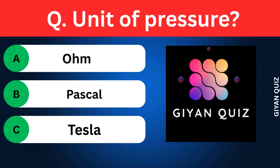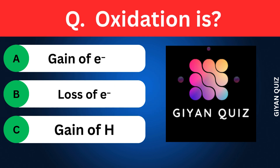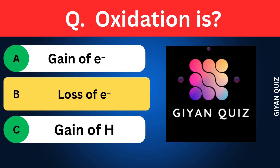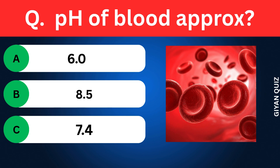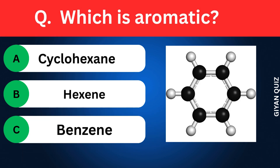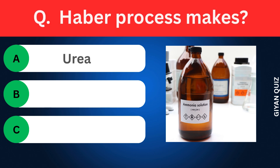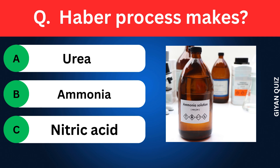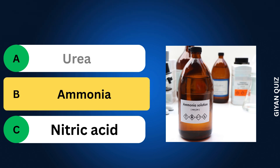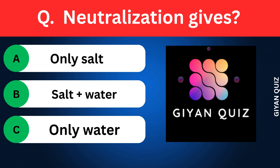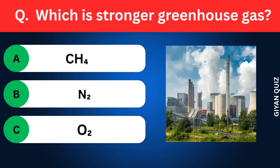Dry ice is? Options: Solid oxygen, Solid carbon dioxide, Solid nitrogen. Correct answer: solid carbon dioxide. Unit of pressure? Options: Ohm, Pascal, Tesla. Correct answer: Pascal. Oxidation is? Options: Gain of electrons, Loss of electrons, Gain of hydrogen. Correct answer: loss of electrons. pH of blood? Options: Approx 6.0, 8.5, 7.4. Correct answer: 7.4. Which is aromatic? Options: Cyclohexene, Hexene, Benzene. Correct answer: benzene.